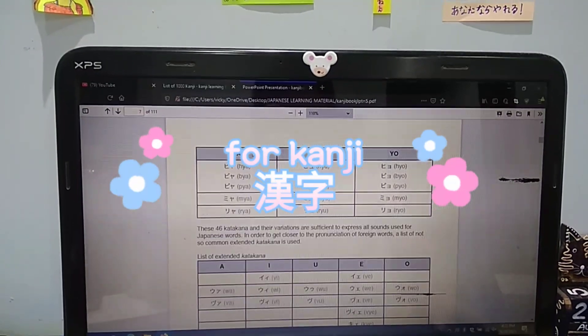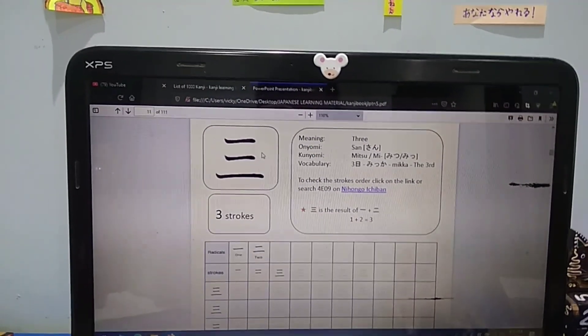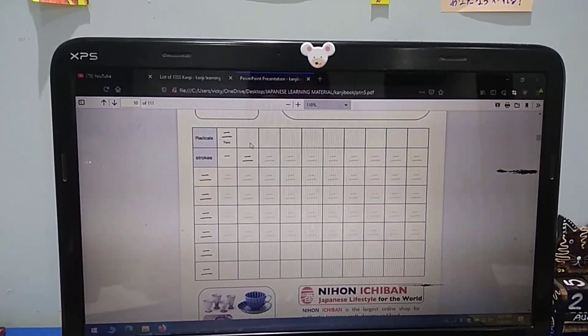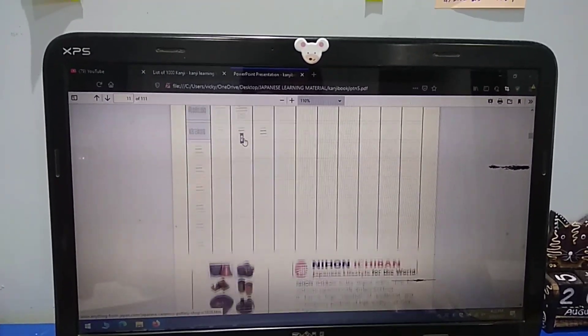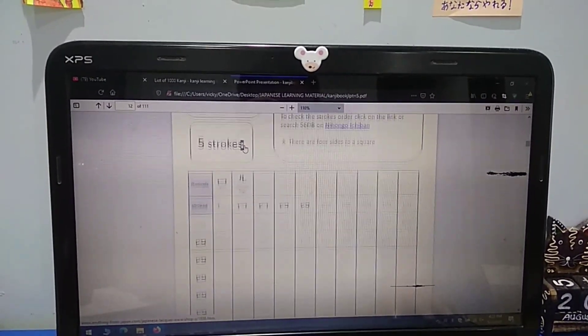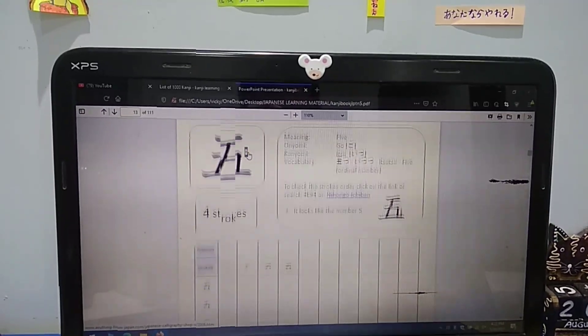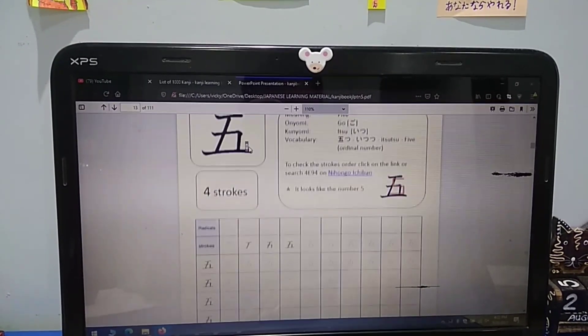Secondly, for Kanji, I found this book in PDF. The link is in the description box so you can check it out. This book is purposely made for Japanese Kanji learners and it also helps you to memorize Kanji by illustration so that makes it more easy.